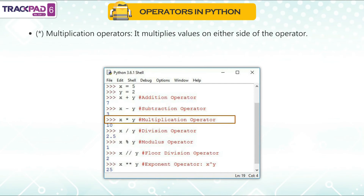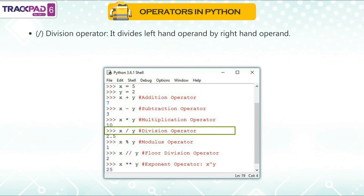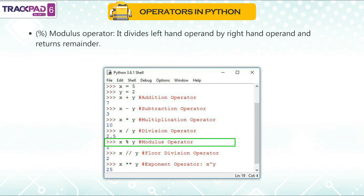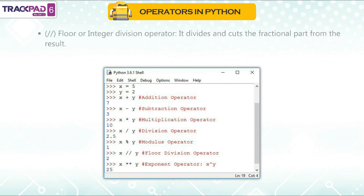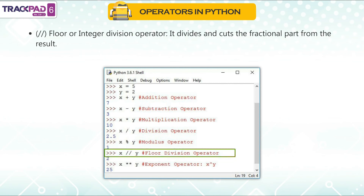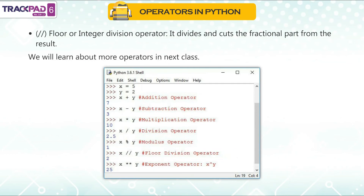More arithmetic operators: The division operator (/) divides the left-hand operand by the right-hand operand. The modulus operator (%) divides and returns the remainder. The exponentiation operator (**) performs exponential (power) calculation on operands. The floor division operator (//) divides and cuts the fractional part from the result. More operators will be covered in the next class.